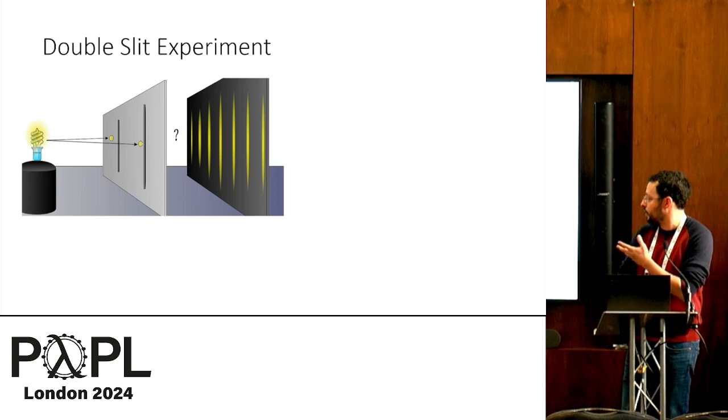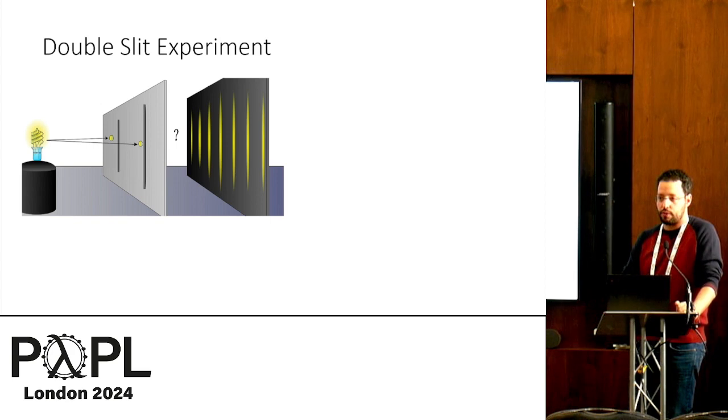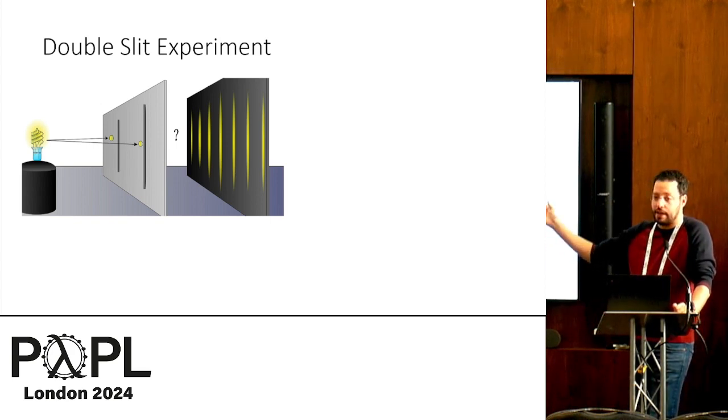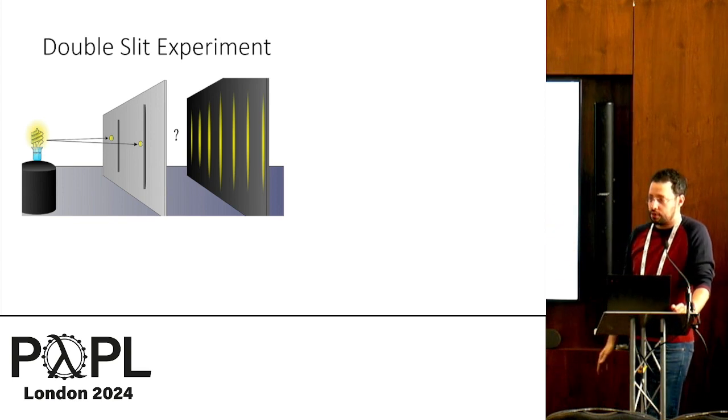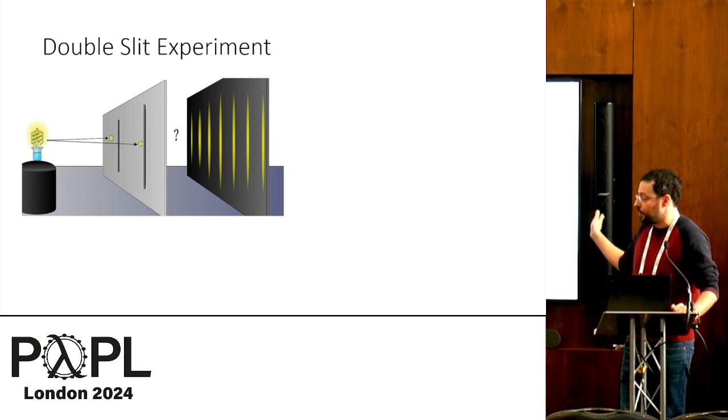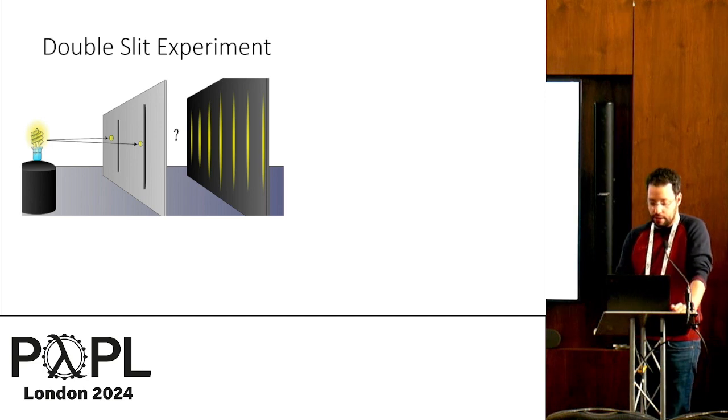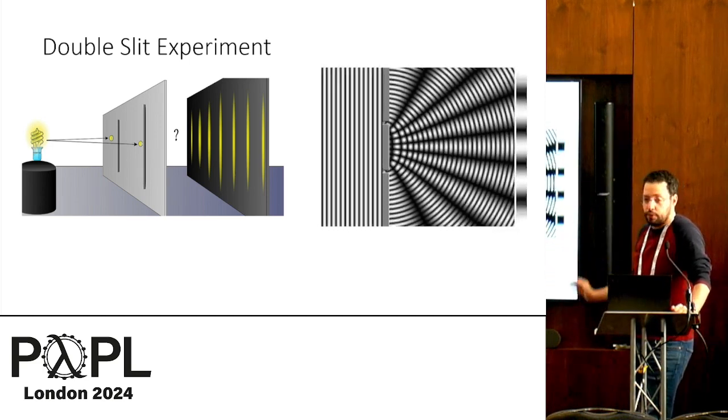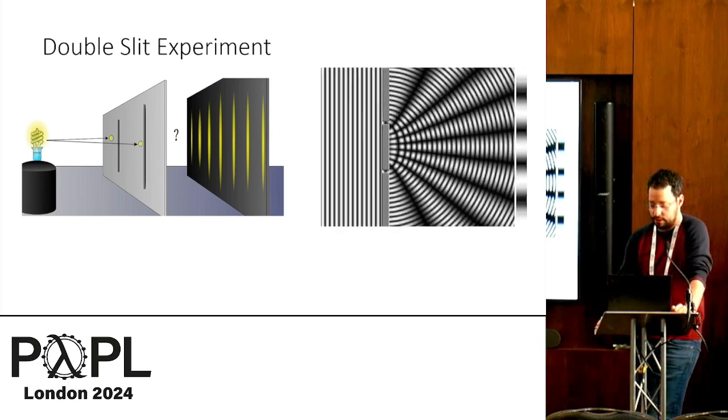So I want to introduce it with this double slit experiment. It's a very famous experiment that was one of the origins of quantum mechanics. And the idea is that you have some source of light, or it could be particles like electrons, and there are two slits that the particles can go through, and then there is a screen. And instead of seeing just two stripes mirroring the two slits, we actually see this interference pattern that can be explained by interference of waves. So if these are waves, it's very well understood.